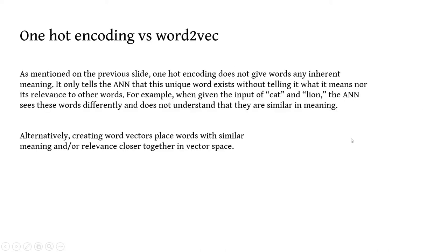So now let's discuss one-hot encoding versus word-to-vec. And as I've mentioned, one-hot encoding does not give each word an intrinsic meaning. It simply tells the computer what each word is. It simply tells the computer that this is a unique word, it's different from all the other words in the corpus. So if you use this method, then the artificial neural network doesn't actually understand how it's relevant to other words. So for example, given the word cat and the word lion, the artificial neural network sees these two words completely differently and doesn't understand that they actually have a similar meaning.